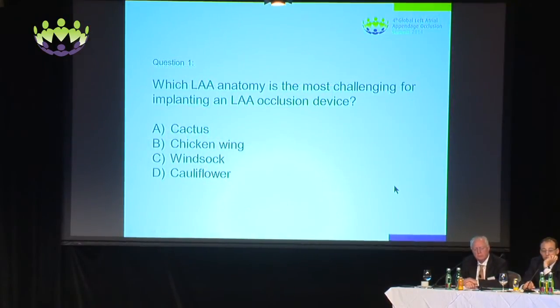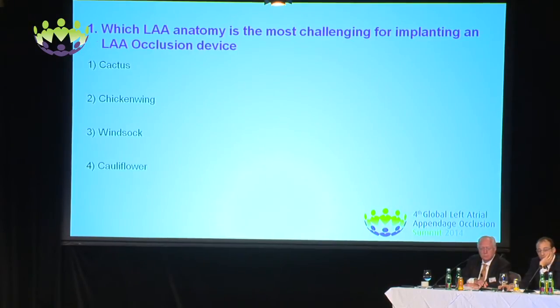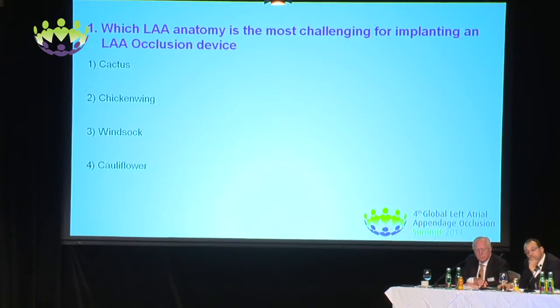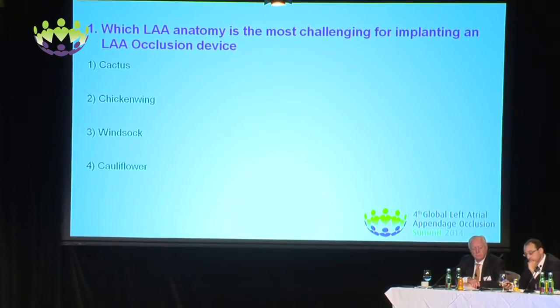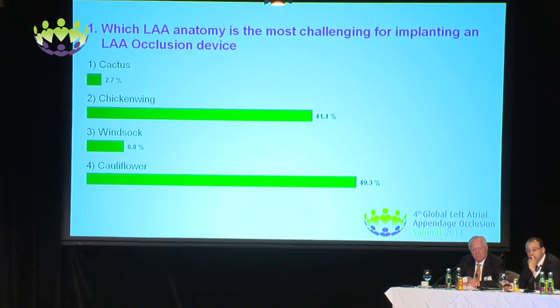Can we have the first question from the system, please? Question one: which left atrial appendage anatomy is the most challenging for implanting an LAA occlusion device? And the results, please. So the majority would think it's a cauliflower pattern, followed by the chicken wing. Thank you. Can we move back to the presentation, please?